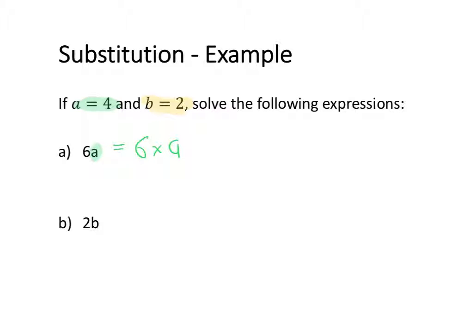For example, we know that a is equal to 4. So this time when we write it, instead of writing a, we're going to write 4. So 6 times 4 and that is equal to 24. So the value of 6a when a is equal to 4 is 24.